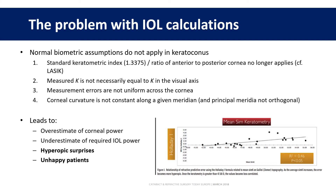Secondly, the measured K doesn't necessarily coincide with the visual axis. Thirdly, measurement accuracy will vary across the cornea. And finally, the curvature is not constant along a particular meridian — the astigmatism is irregular rather than having nice meridia at 90 degrees to each other. Overall, this leads to an overestimate of the corneal power, an underestimate of the required IOL power, and therefore a hyperopic surprise and an unhappy patient.